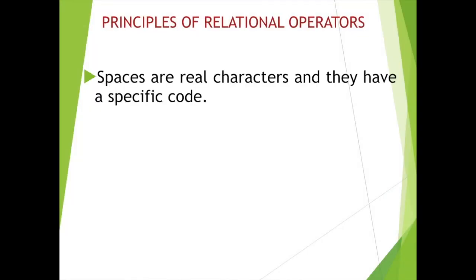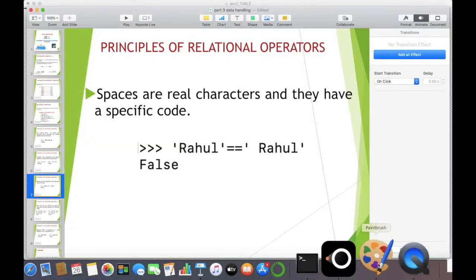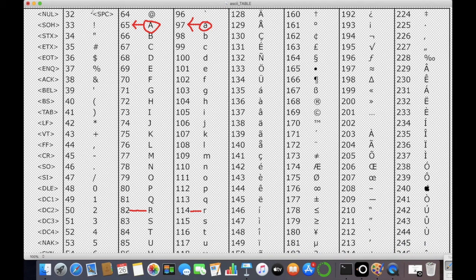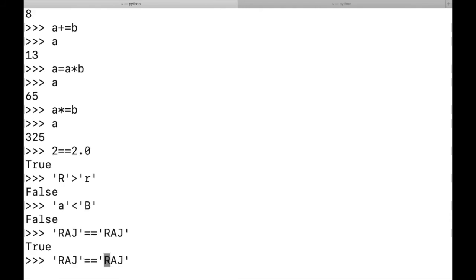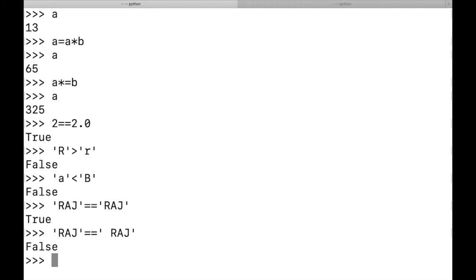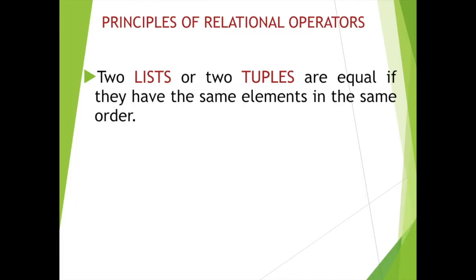The third principle is that spaces are real characters and they have a specific ASCII code. So if I write 'rahul' == ' rahul' (with a space before the second rahul), I get False, because space has its own ASCII code. The ASCII value of space is 32. Therefore, 'raj' == 'raj' (without space) gives True, but adding a space gives False because spaces are real characters.